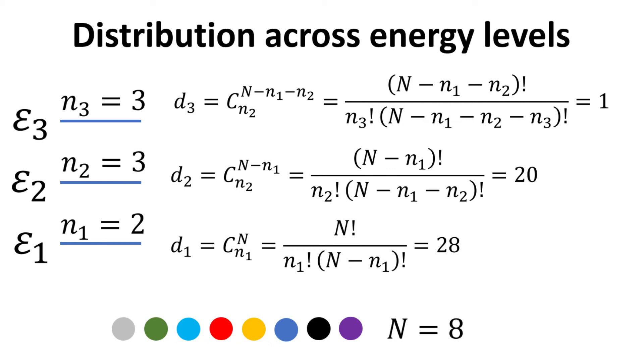Hence, the number of different combinations of choosing n2 equals to 3 particles out of a total of n minus n1 particles is given by n minus n1 factorial divided by n2 factorial and divided by n minus n1 minus n2 factorial, and we denote this combination as d2.